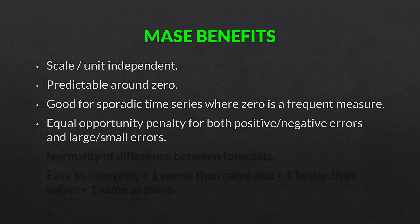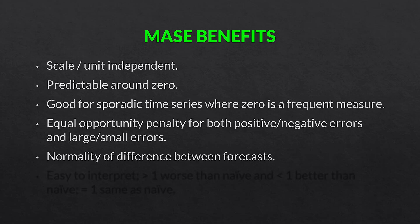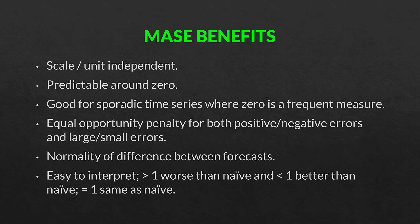Some forecast accuracy measures are biased — some favor positive or negative errors, and some favor large or small errors. MASE reduces bias with respect to both. It also has normality of difference between forecasts. And finally, and maybe most importantly, it is easy to interpret. A value greater than one means forecast method X is worse than the naive forecast. A value less than one means it's better. At or around one means it's about the same as the naive forecast.